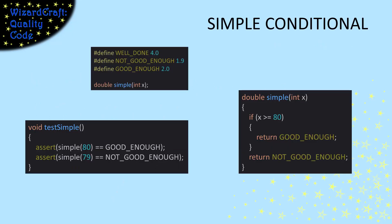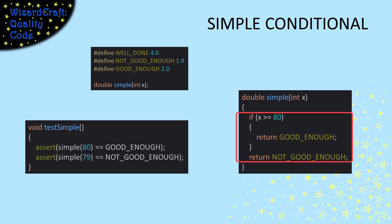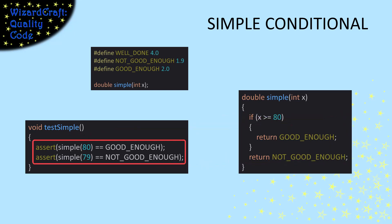For a simple conditional, there's only one border case and things will look like this. This function returns one of two values and the border is between 79, which is not good enough, and 80, which is good enough. You can see that in our test as two asserts, testing the values 79 and 80.